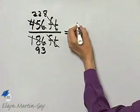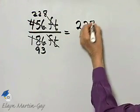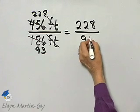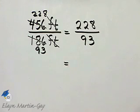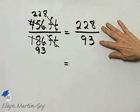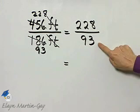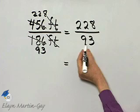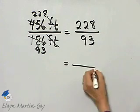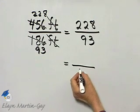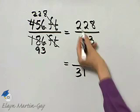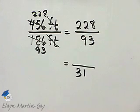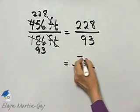So far I have 228 over 93. I'm still trying to write this ratio in simplest form. And I believe there's a common factor now of 3 that I did not see earlier. 93 divided by 3 is 31, and 228 divided by 3 is 76.